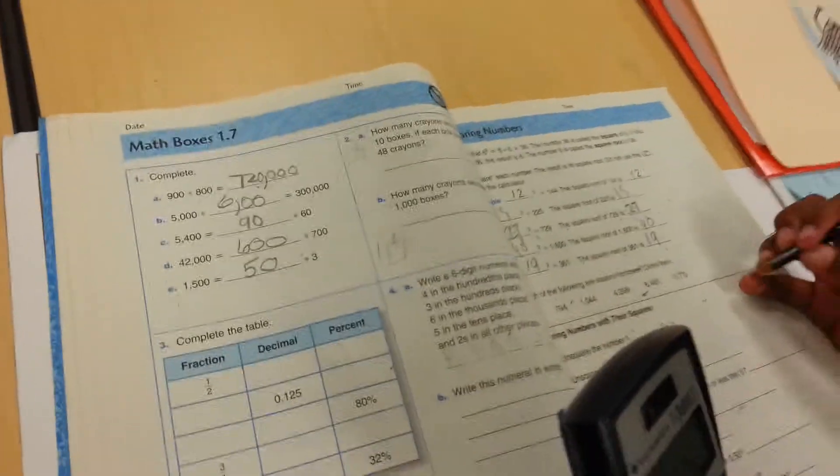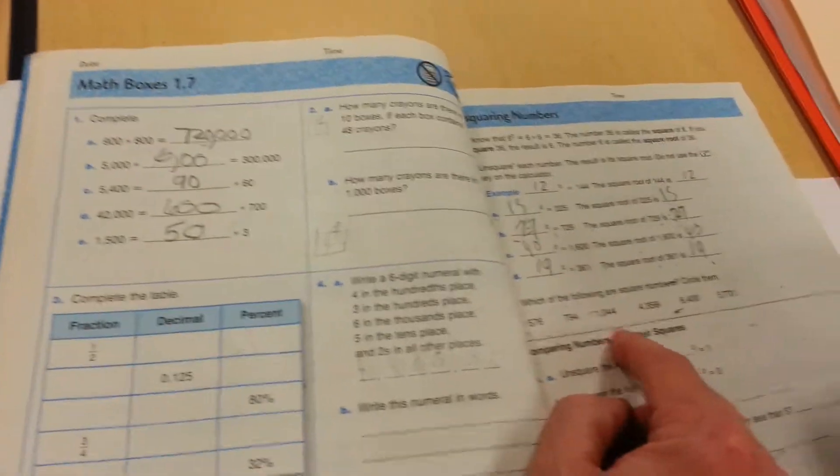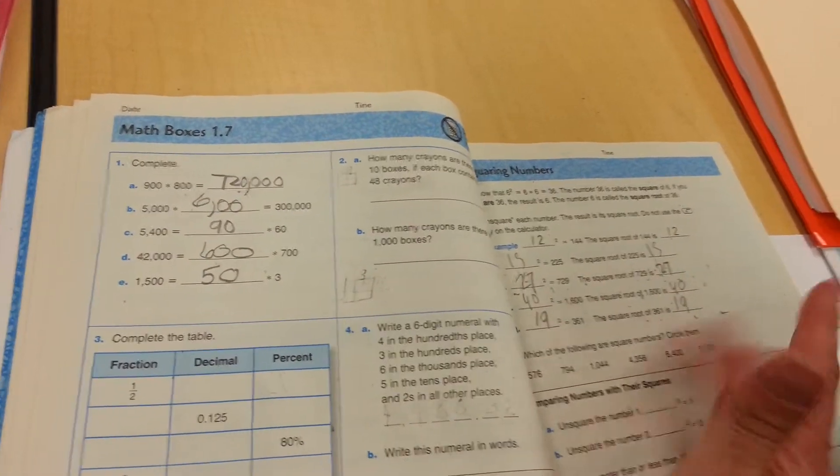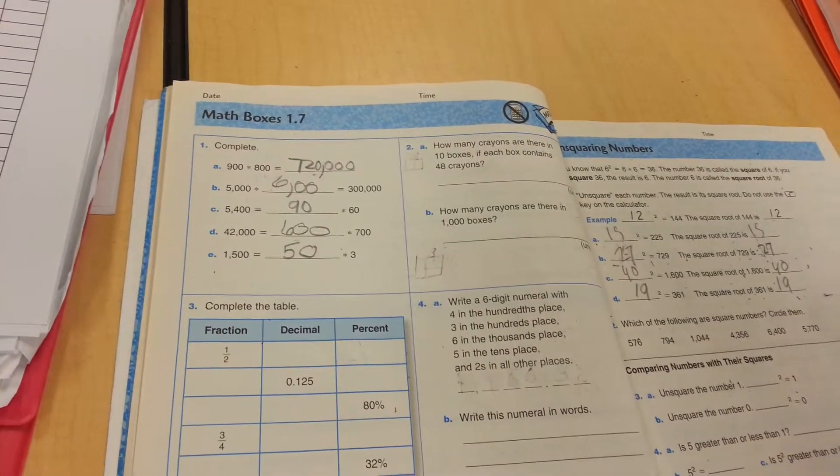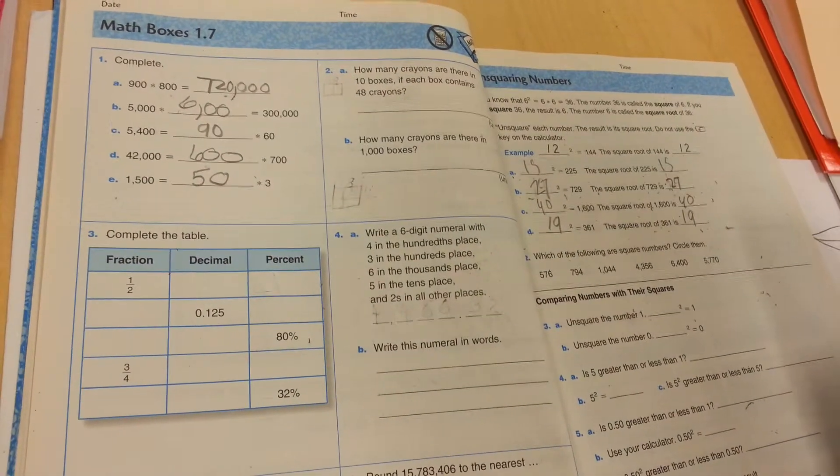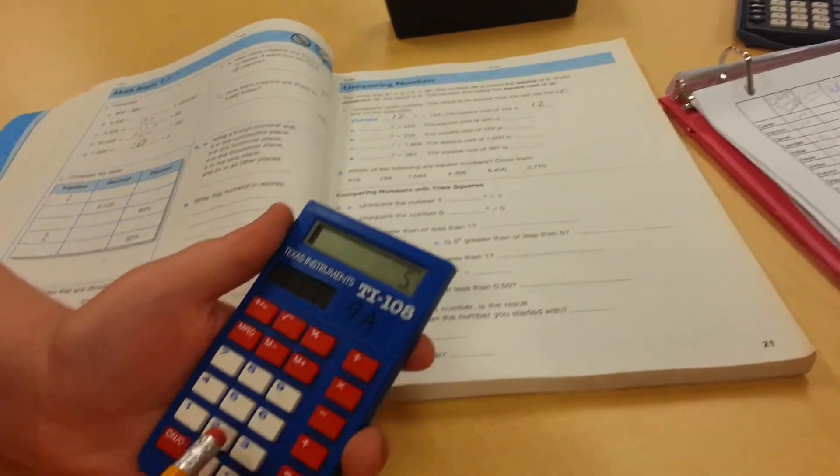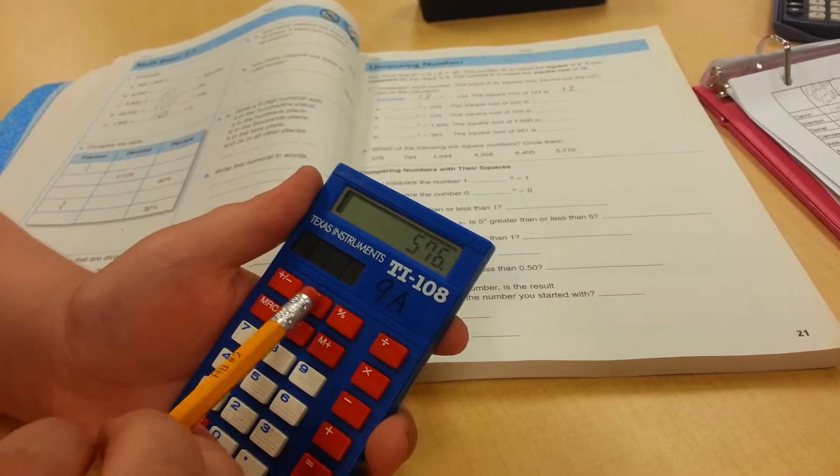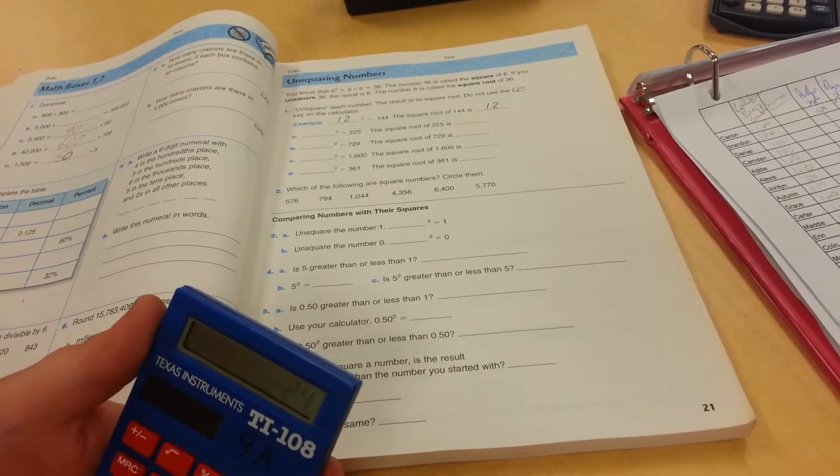And so I remember saying 19 and 361. I wrote down 19. So which of these following are square numbers? 576, 794. Daniel, type in 576 and hit square root key. That is a square number. The first one's a square number. 576 is square.